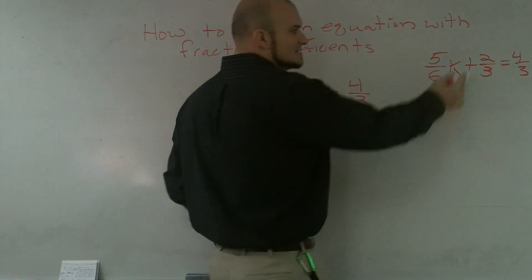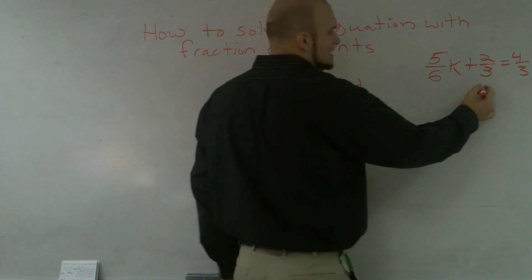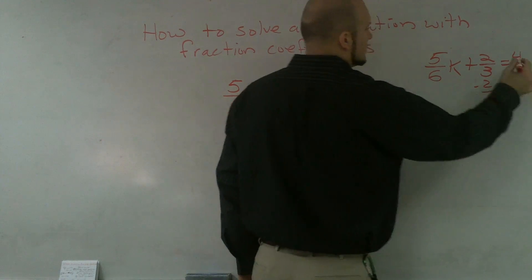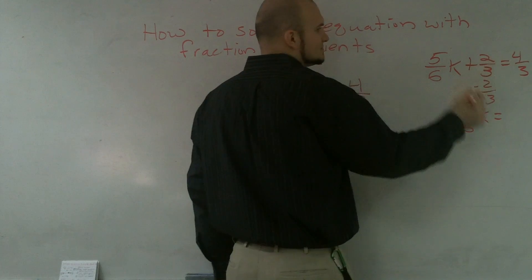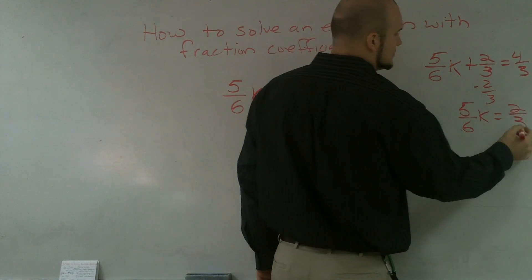Our old method applies. Since we're adding our two-thirds to the k, you subtract two-thirds. Okay,